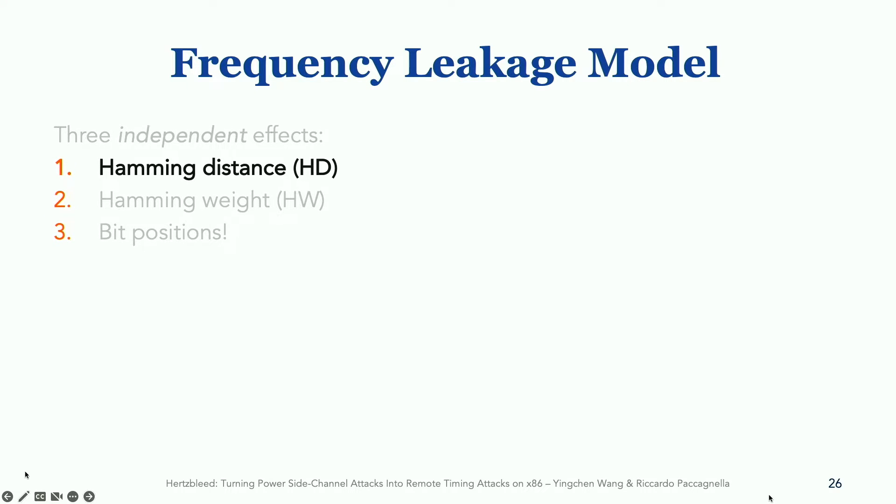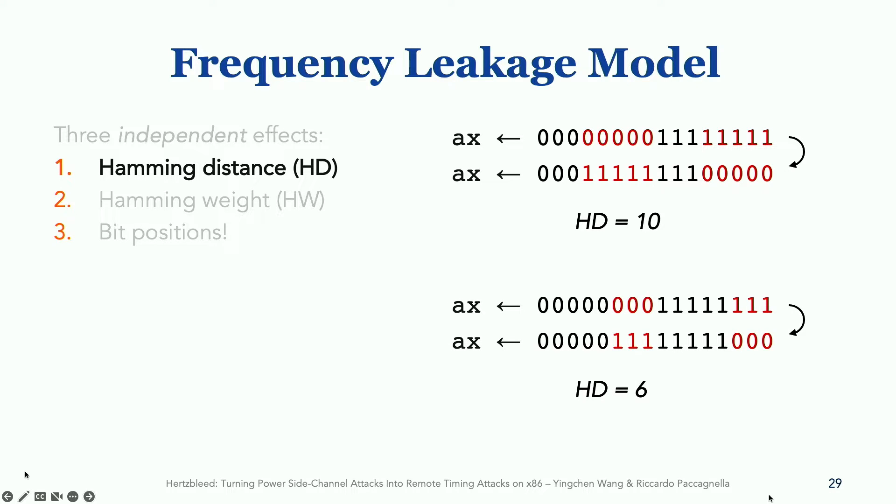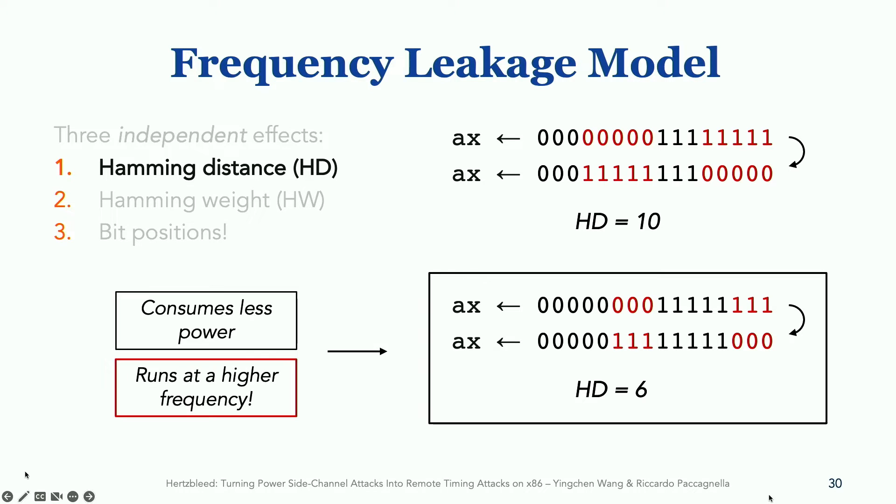Let's start from the hamming distance effect. Suppose that during the workload's execution, we have a computation that updates the content of a register, as shown in the slide. This might be, for example, a shift left instruction. When this computation occurs, there are, in this case, 10 bit flips from one to zero or from zero to one, which means that the hamming distance is 10. In this other example, however, there are only six bit flips, which means that the hamming distance is six. And what we found is that the lower the hamming distance, the lower the power consumption, and the higher the frequency.